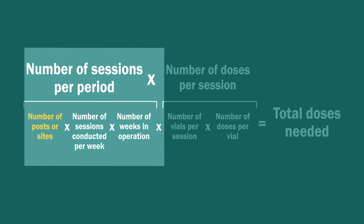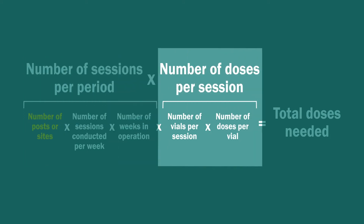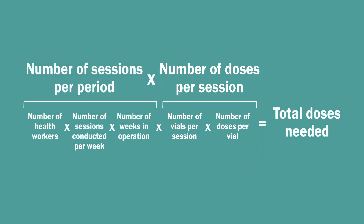To determine the number of doses needed per session, you would multiply the number of vials opened per session on average by the number of doses per vial. Let us walk through an example of how to use the formula to estimate your Penta needs for the next month.